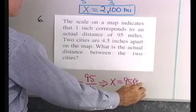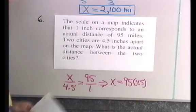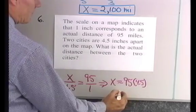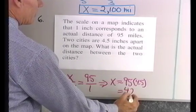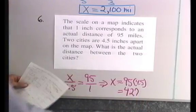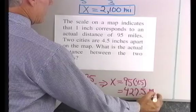So 95 times 4.5. And if I do that multiplication, I end up with, let's see, 427. Is that right? 427, yes. 427.5 miles.